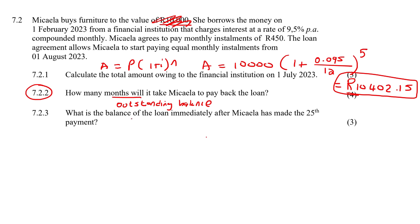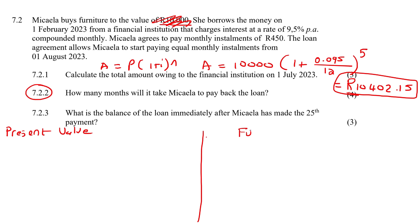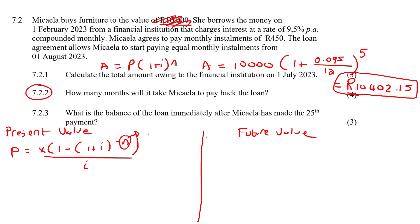The next question says: what is the balance of the loan immediately after Makayla has made the 25th payment? That just means the outstanding balance. I'll start with the present value method — you only need to do one in the exam. With the present value method, N is the number of payments you still need to make. So remember when we calculated N = 25.63, when you use this method you actually have to use the non-rounded value: 25.631528.